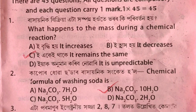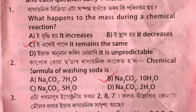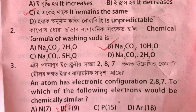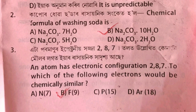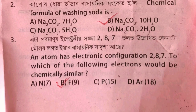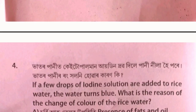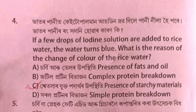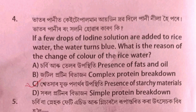The second question: The chemical formula of washing soda is Na2CO3·10H2O. The chemical formula here involves 2H7 — this is the chemical formula being referenced for the second question.